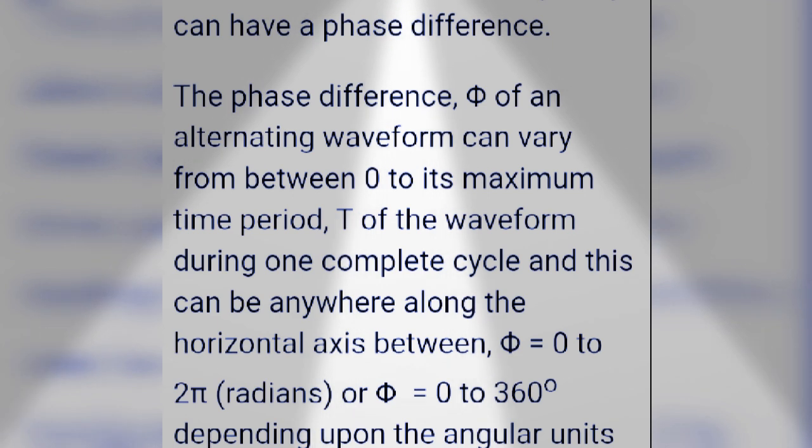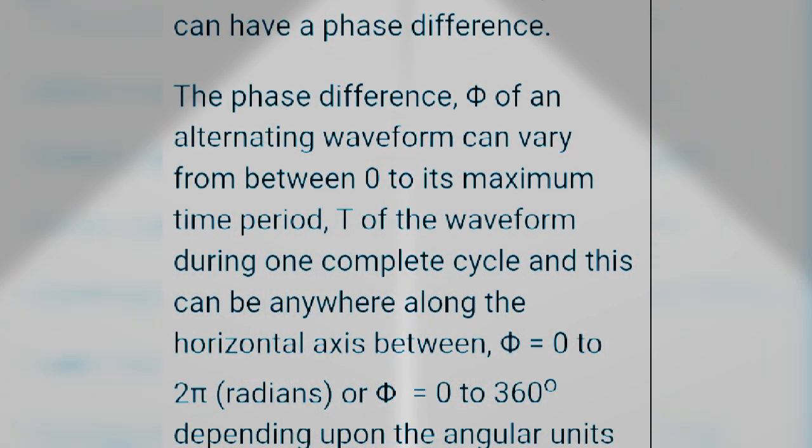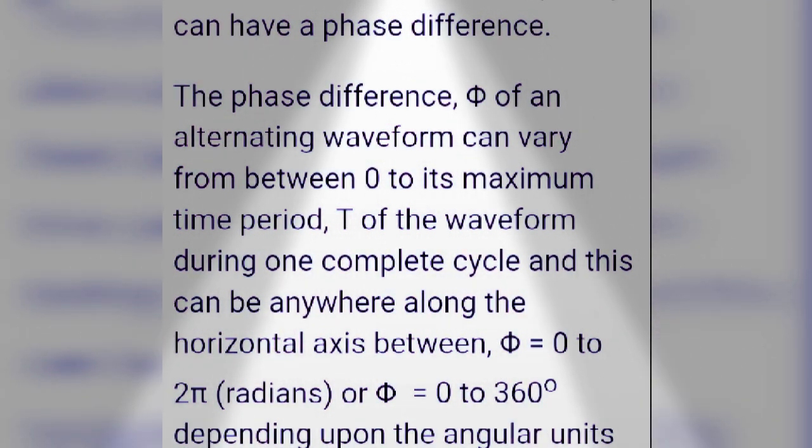This can be anywhere along the horizontal axis between θ = 0 to 2π radians or 360 degrees, depending upon the angular units used.